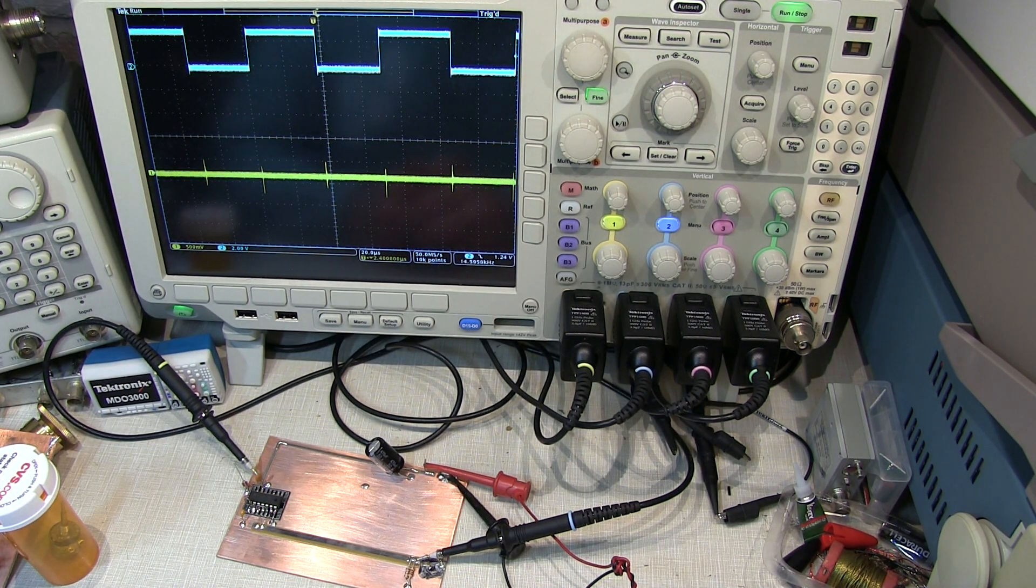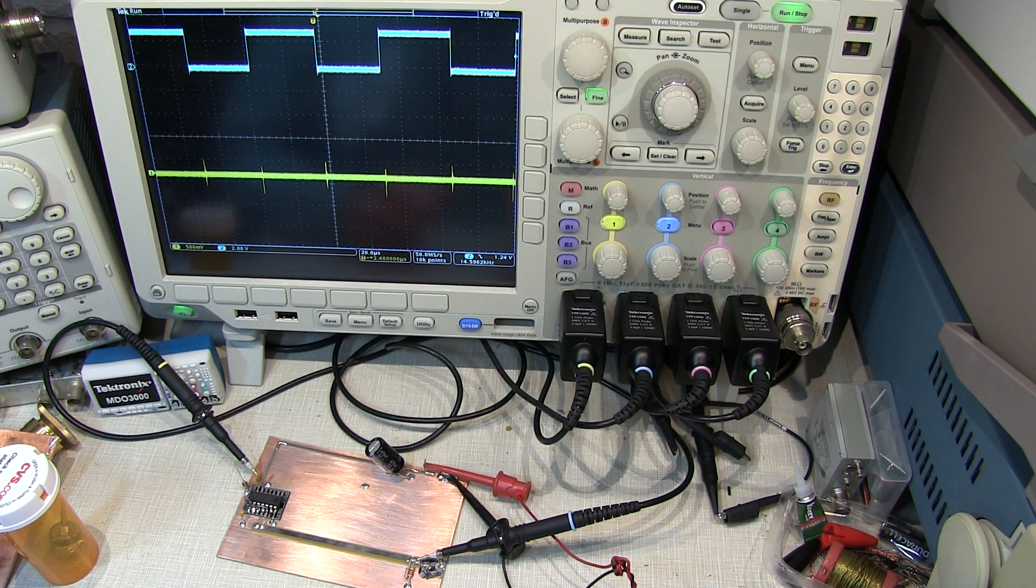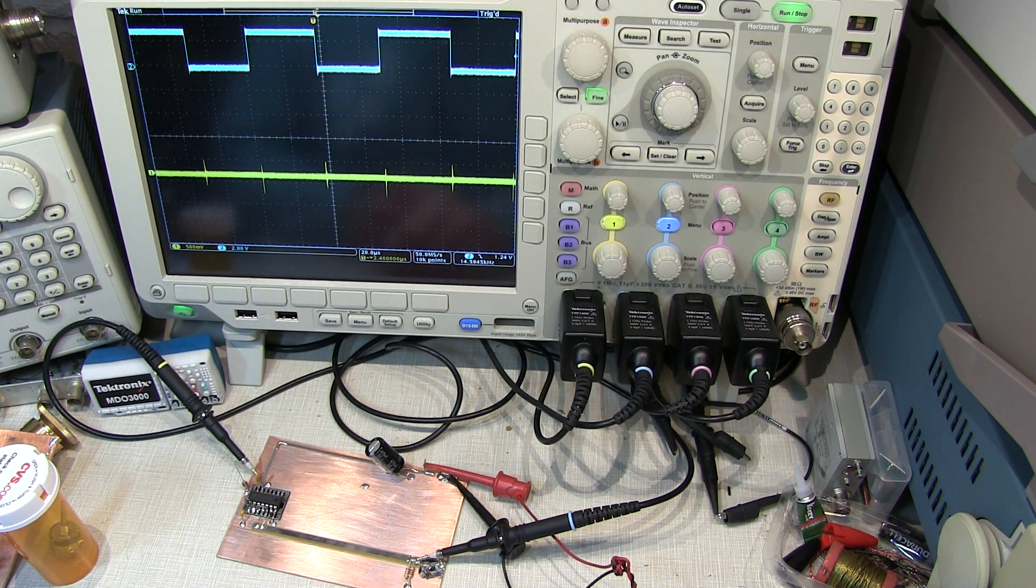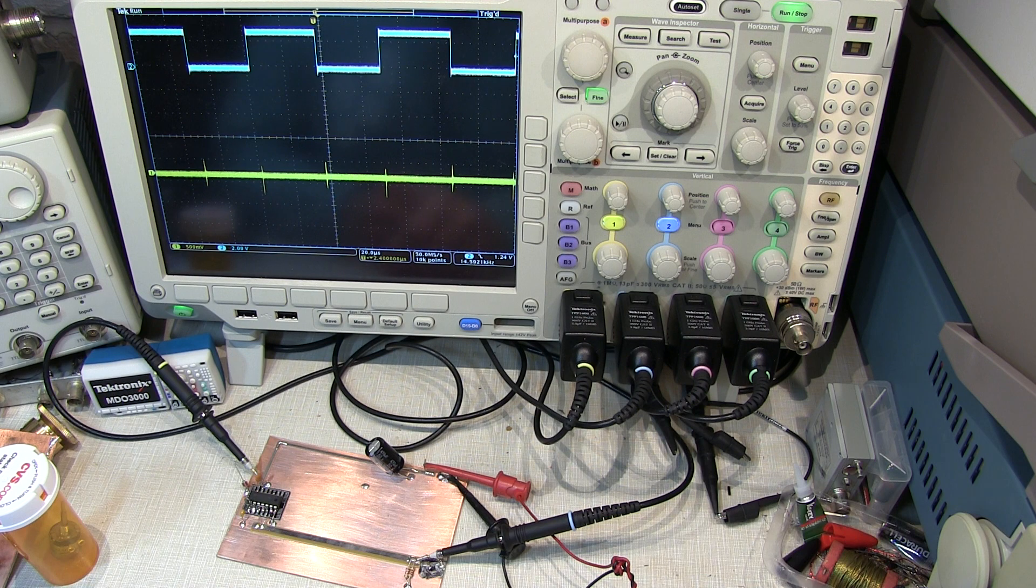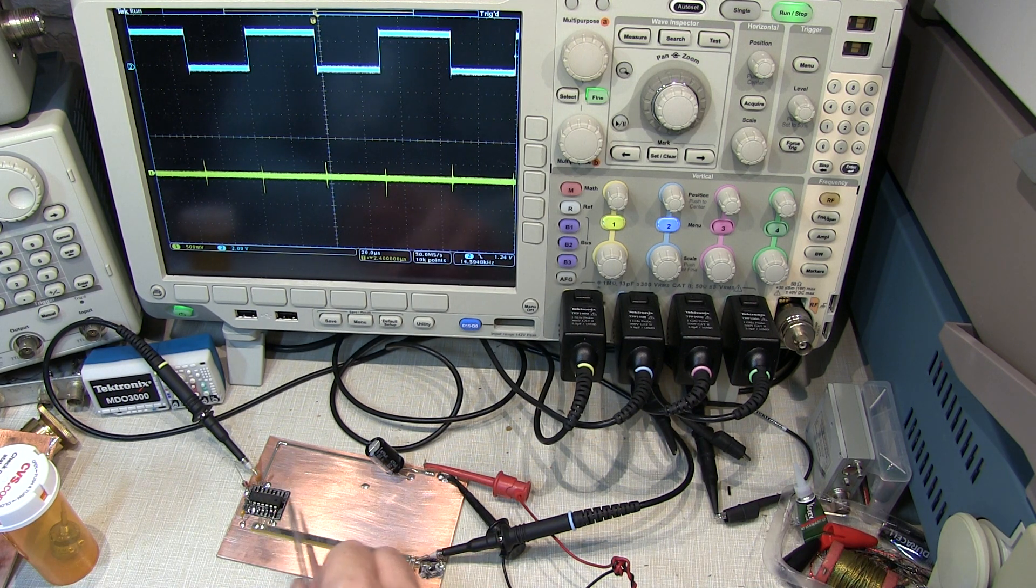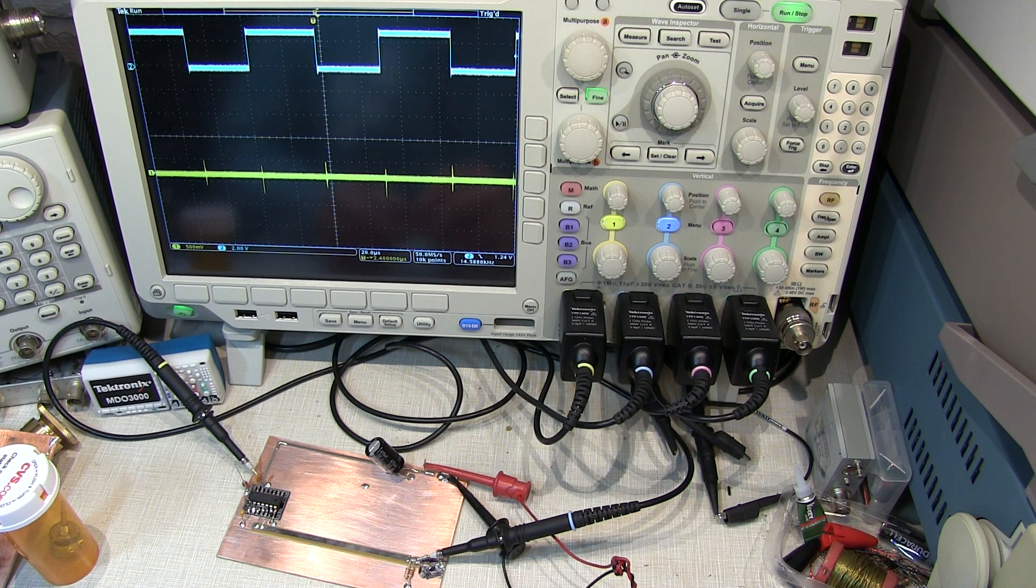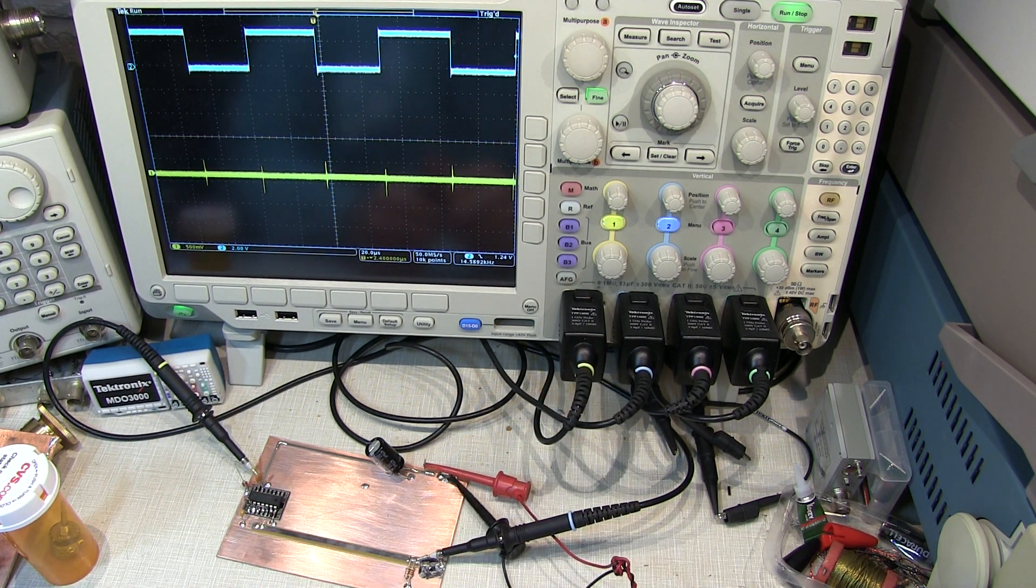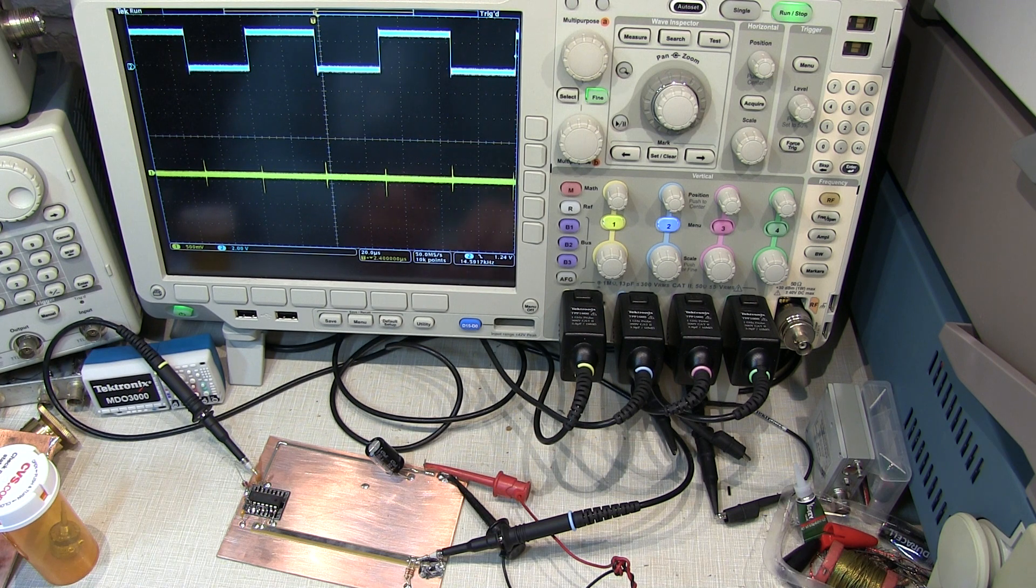So I hope you learned a little something about the different roles that the different power supply decoupling and filtering capacitors play on a circuit board and why some of them are placed close to our active devices and some of them are not. If you like what you see, please give me a thumbs up. If you haven't subscribed already, please do so. And thanks again for watching.